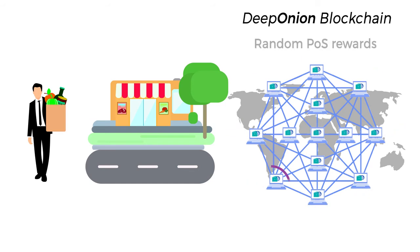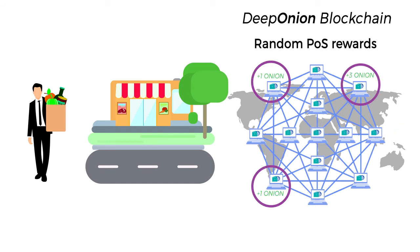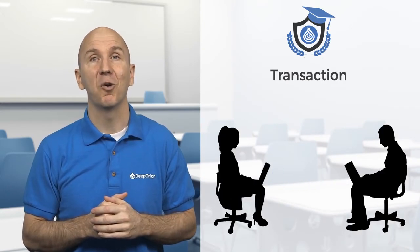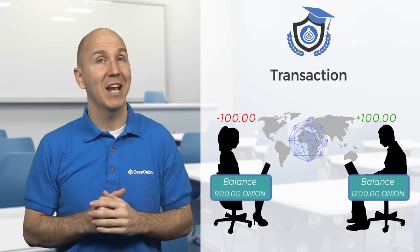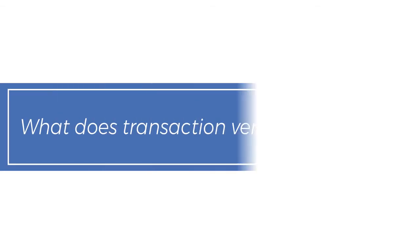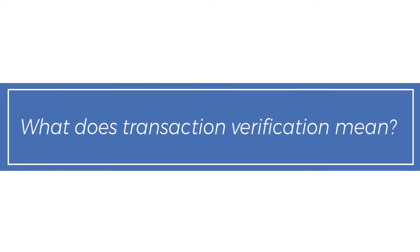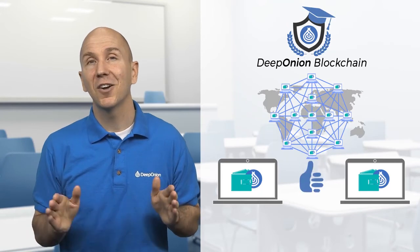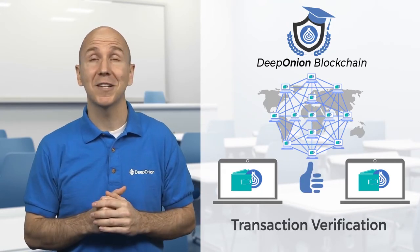For helping the network, randomly one of the computers will be given a reward. A transaction is when someone has sent Onion to another place or person. Both balances have now changed and all of this information is stored on the blockchain. When you send someone Onion, the transaction needs to be verified by the network. This is called transaction verification and just requires a small amount of time.